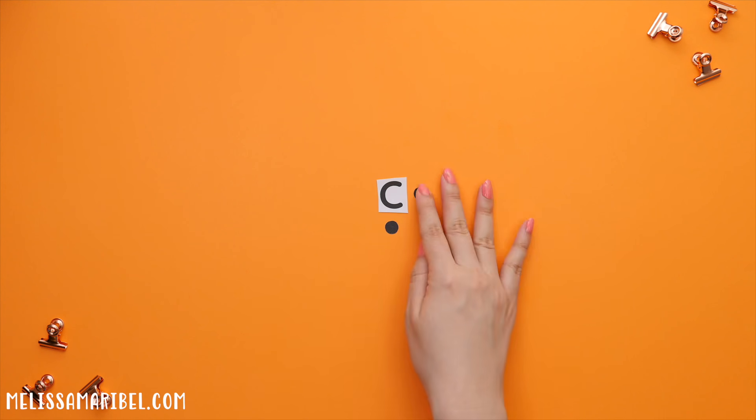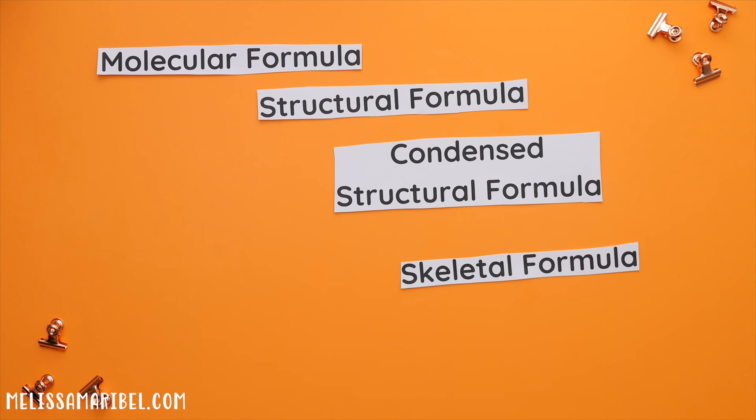Remember, carbon has four valence electrons, which means it could have four bonds. Knowing this, let's go over the four different ways a molecule can be represented.